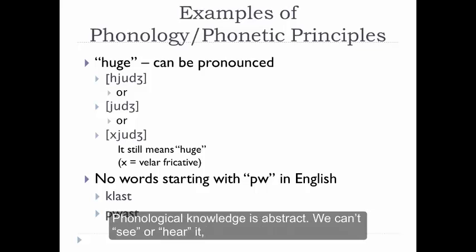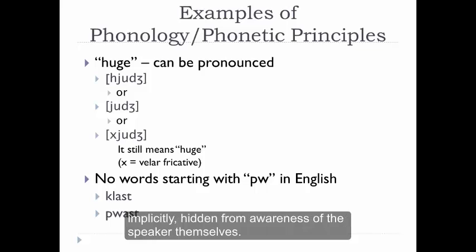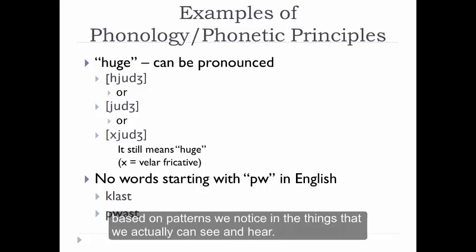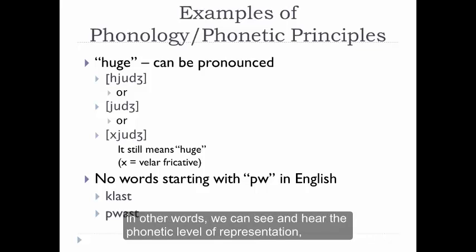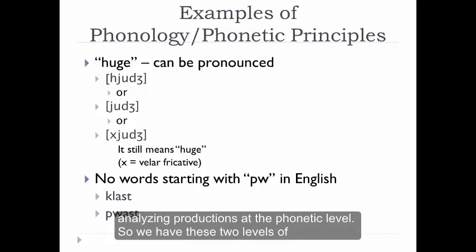Phonological knowledge is abstract — we can't see it or hear it, since it exists only in the mind of a speaker of a language, and even there it exists mostly implicitly, hidden from the speaker's own awareness. So we have to infer what phonological knowledge consists of based on patterns we notice in things we actually can see and hear — the actual productions of speakers. In other words, we can see and hear the phonetic level of representation, and we use that evidence to infer what phonological knowledge must consist of by analyzing productions at the phonetic level.